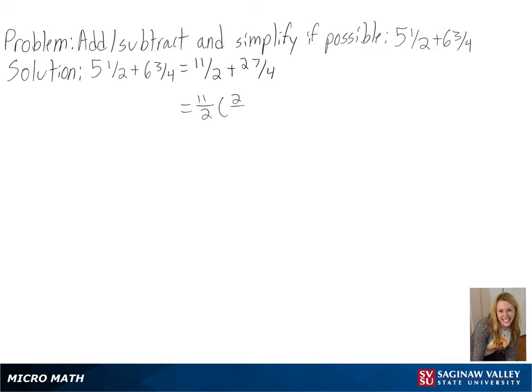In this case, our common denominator is 4, so we do not have to multiply the second fraction, but we are multiplying the first fraction by 2 over 2 since that is equal to 1. Then we get 22 over 4 plus 27 over 4 to get 49 over 4.